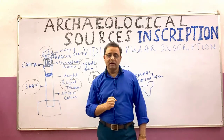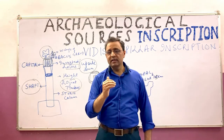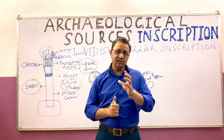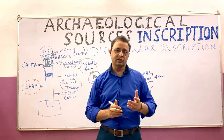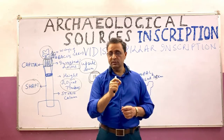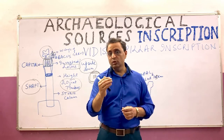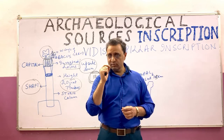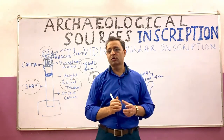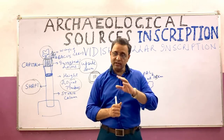However, inscriptions also have limitations. One limitation is that the quantity of pillar inscriptions is less. Another limitation is that they can have biasness. For example, Samudragupta's pillar inscription was written by his court poet Harisena, who was biased towards Samudragupta. He could exaggerate positive points, so biasness is a notable limitation of inscriptions.